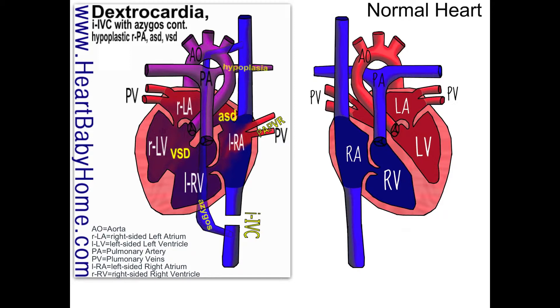Dextrocardia means the heart is reversed — everything's just flipped backwards. That's why you have a right-sided left atrium and a left-sided right atrium.